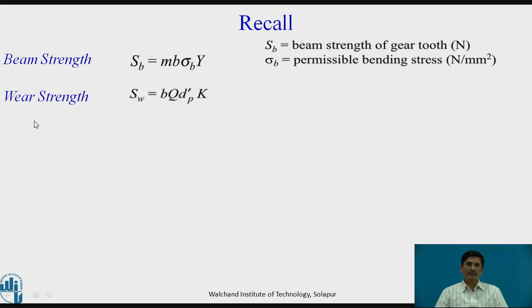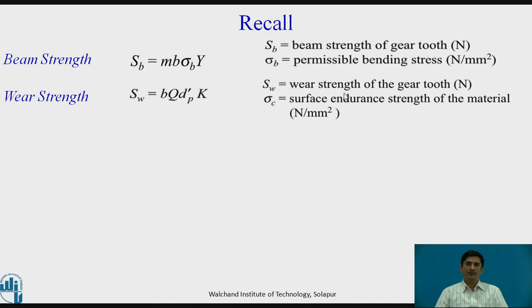Wear strength, Sw equals b q dp k, where Sw is the wear strength of the gear tooth in Newton, sigma c is the surface endurance strength of the material in Newton per mm square.